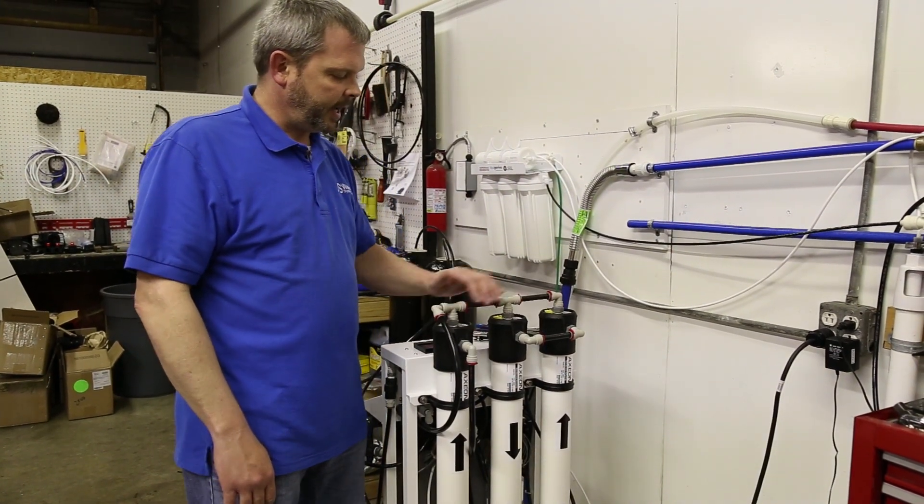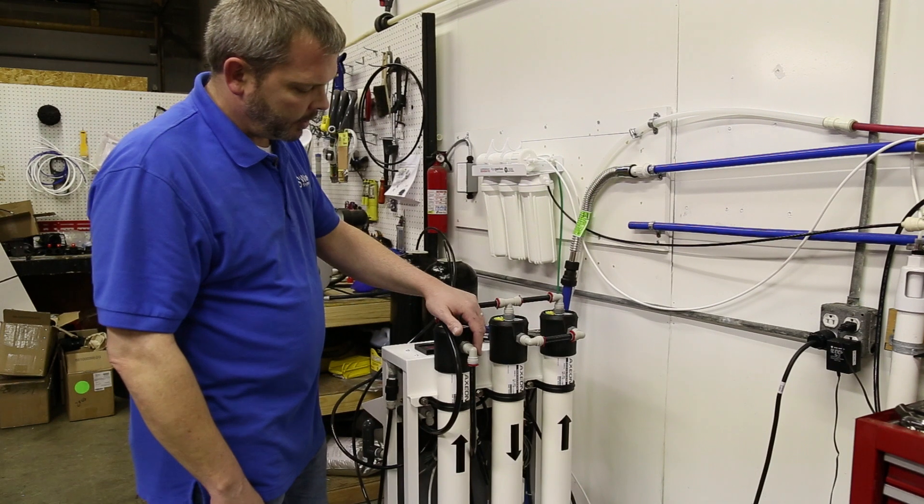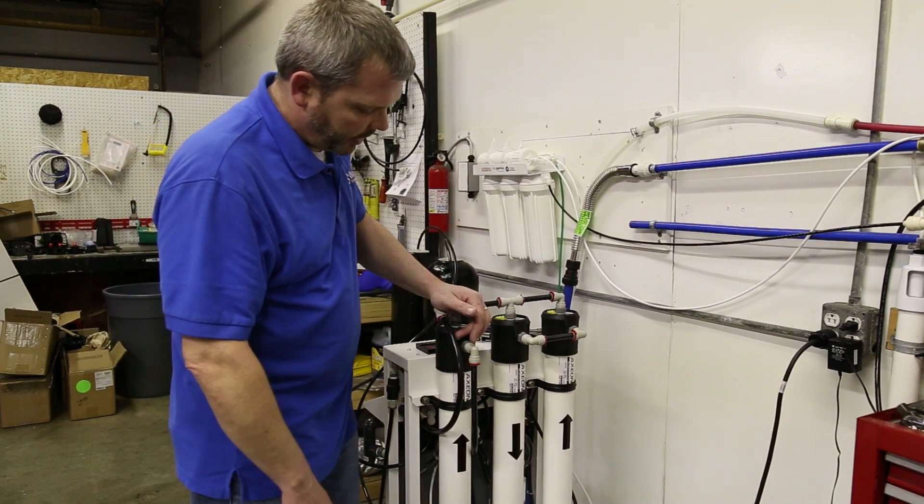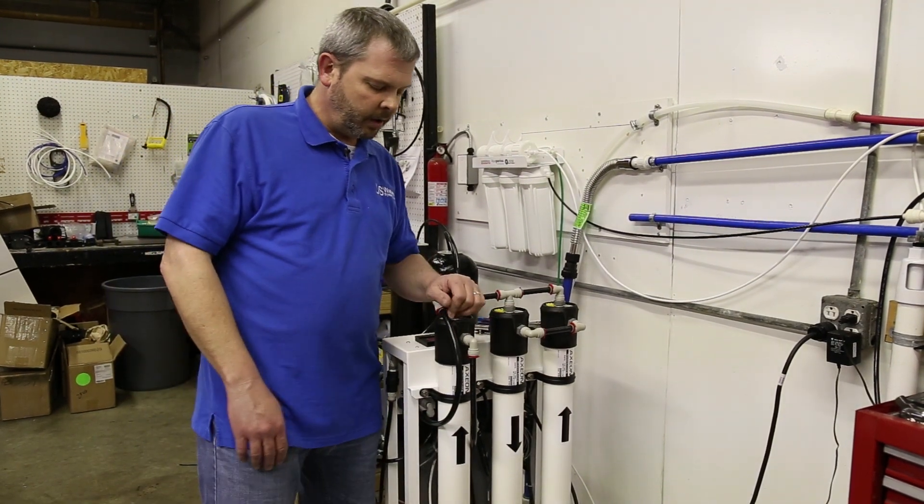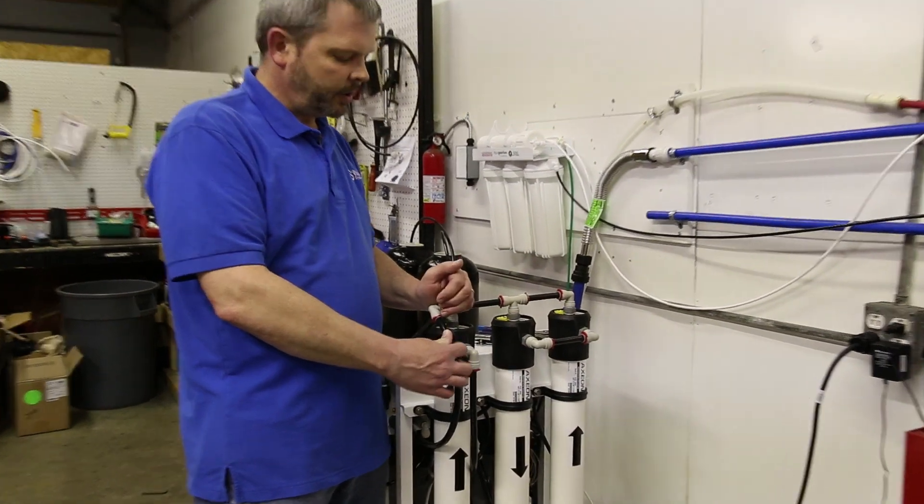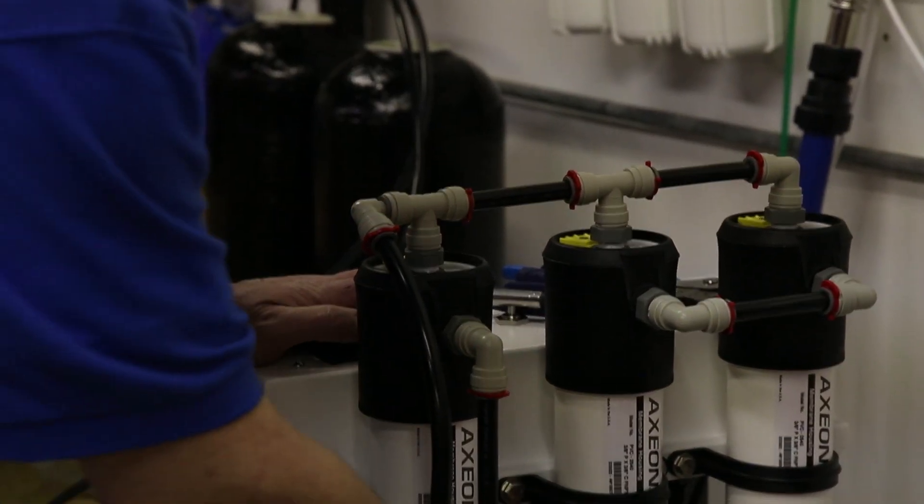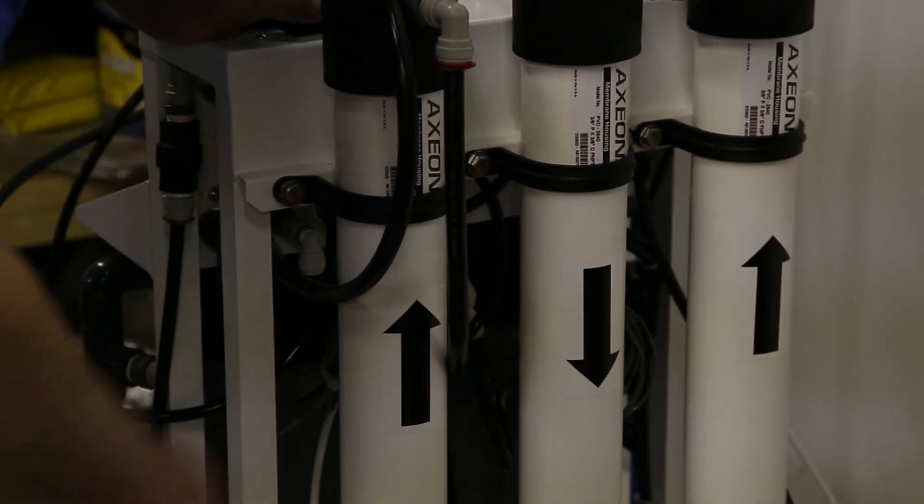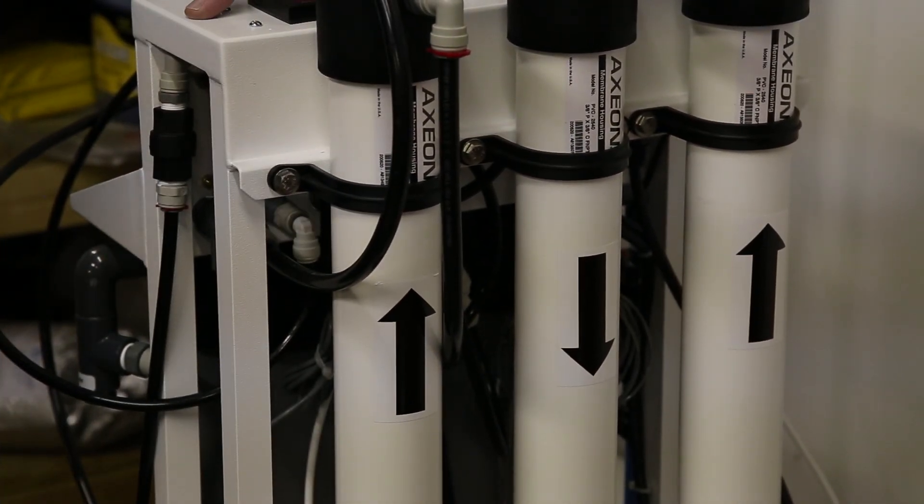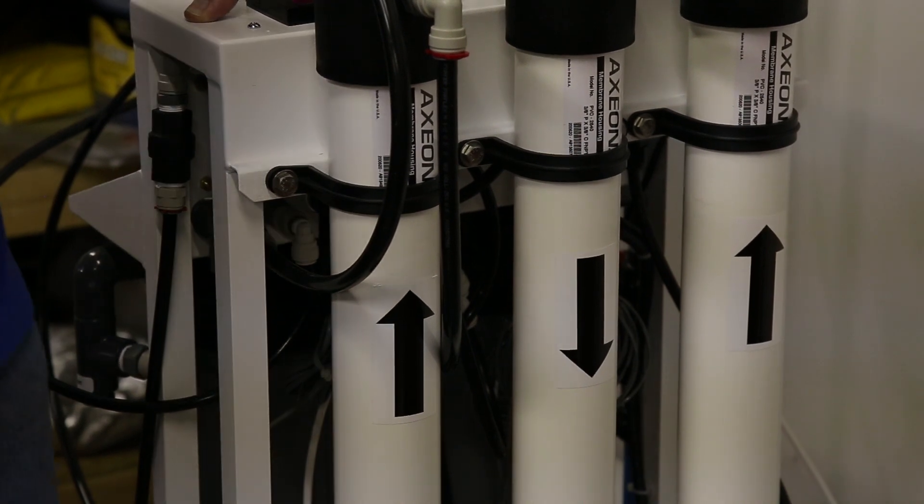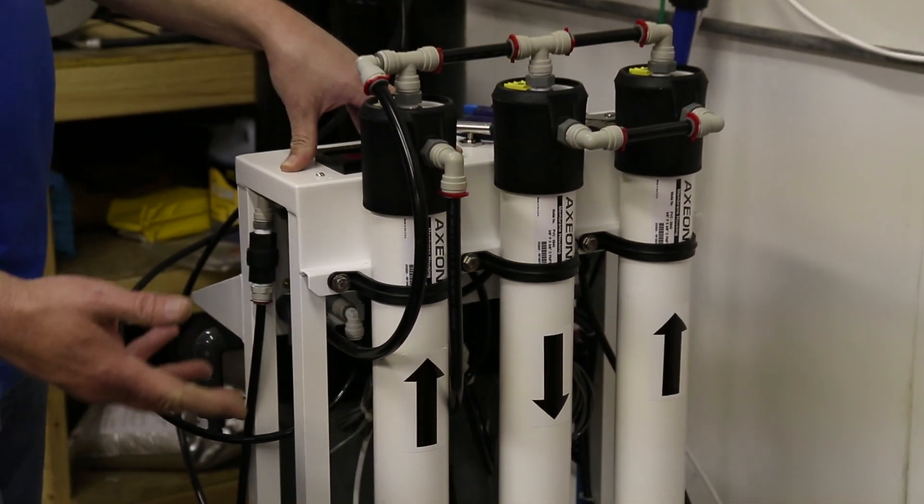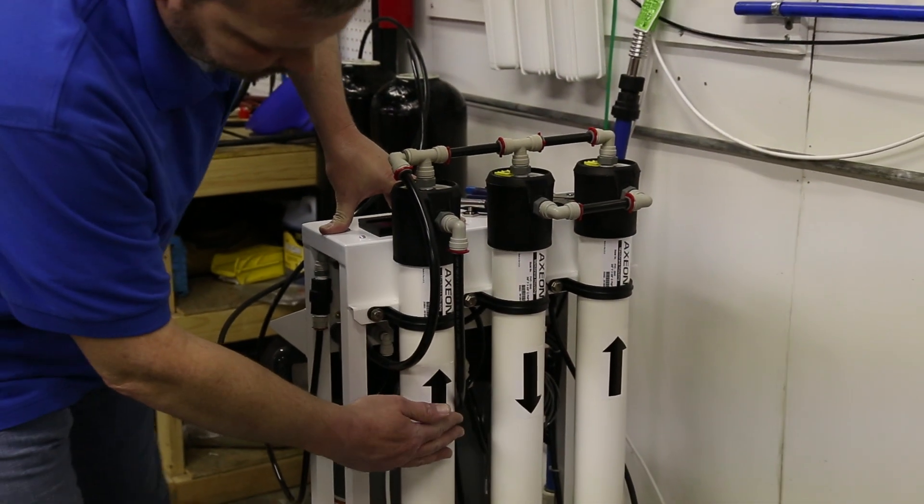Once that's been done, we can start to take the caps off. I'm just going to pull one out today and show you how it goes in there. Before we do that, I want to talk about these arrows that you see on here. These arrows are basically indicating the direction of the flow.